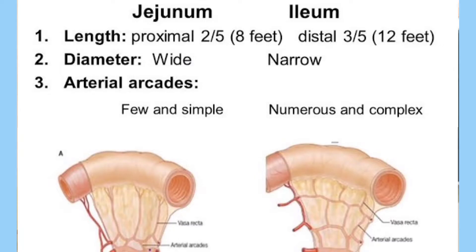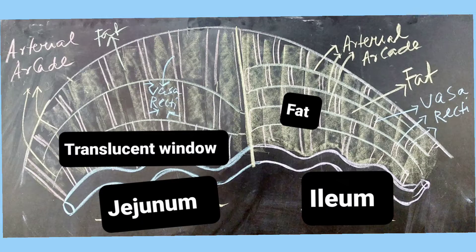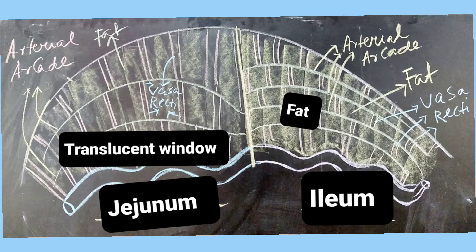So let me recap. The first point: jejunum is thicker, ileum is thinner. Number two: the circular mucosal folds are closely opposed on the jejunal side and widely apart on the ileal side. Thirdly, the translucent windows are prominent on the jejunal side and less prominent on the ileal side because of fat. Fourthly, the number of arterial arcades is one to three on the jejunal side and three to six on the ileal side. Because of this, the vasa recti are longer on the jejunal side and shorter on the ileal side.